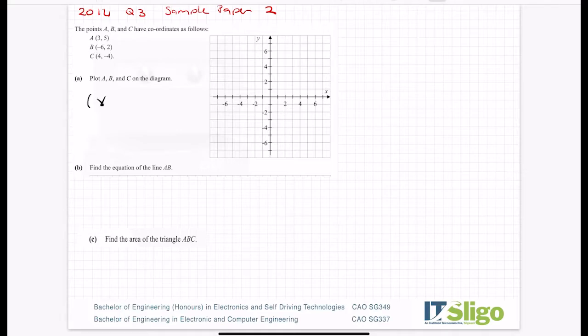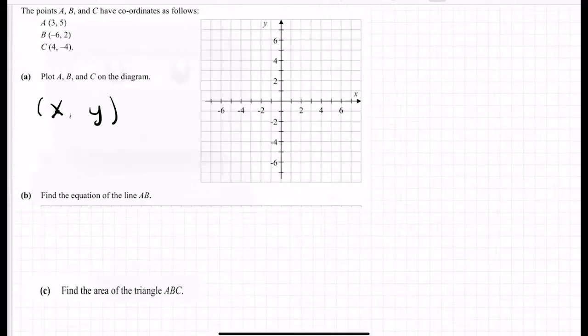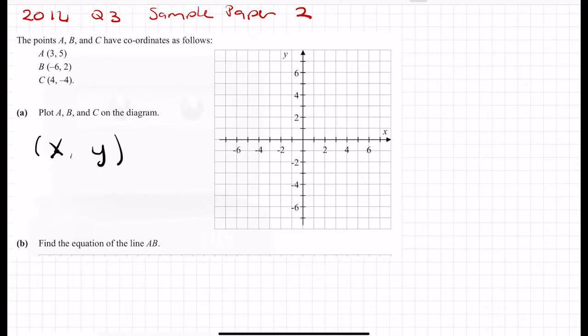Every single point you plot is x comma y. X before y in the alphabet, x before y when you plot. So what do I mean when I say that? With this point here (3,5), I go over 3 on my x and then up or down 5 on my y. So over 3 on my x, that's 3 in the middle, and then up to 5 would be up to here.